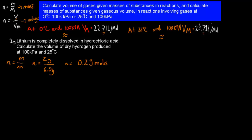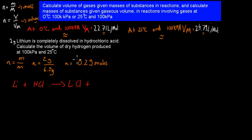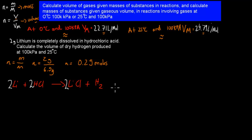Next, we write a balanced equation. Lithium plus hydrochloric acid produces lithium chloride plus hydrogen gas. We check that it's balanced: we have 2 hydrogens on the product side but only 1 on the reactant side, so we add a 2 in front of HCl. Now we have 2 chlorines on the left and 1 on the right, so we add 2 in front of lithium chloride. Now we have 2 lithiums on the right, so we add 2 in front of lithium. This gives us the balanced equation: 2Li + 2HCl → 2LiCl + H₂.